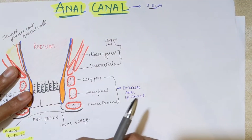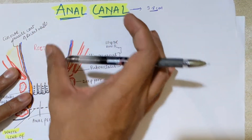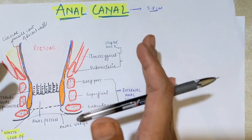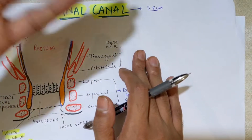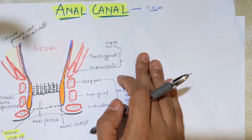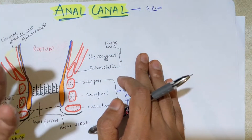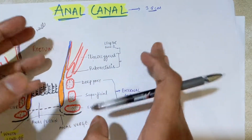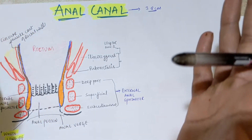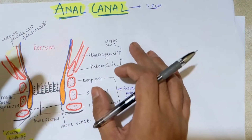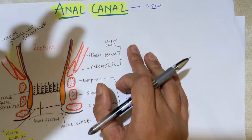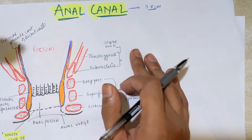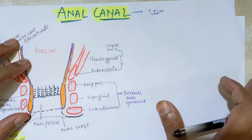In this video, we'll be continuing the section on the large intestine, discussing the anatomy of the anal canal. As discussed in the previous video, the rectum continues into the anal canal at the anorectal junction. The rectal ampulla is the terminal part of the rectum, and from where the rectum narrows at the pelvic floor, the anal canal actually begins. It lies below the pelvic diaphragm and is the terminal part of the large intestine.